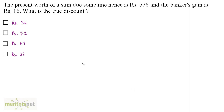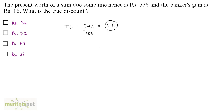We have been asked what is the true discount. True discount is basically the interest earned on the present worth, and that's P·N·R upon 100. The present worth is given as 576, so this is 576 times N·R upon 100, where N is the number of years and R is the rate. We need the value of N·R to calculate the true discount, which we can get from the banker's gain.